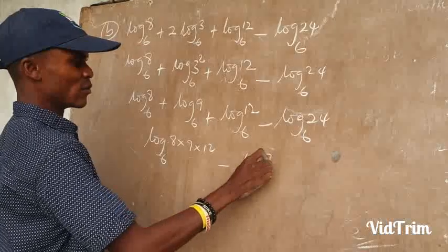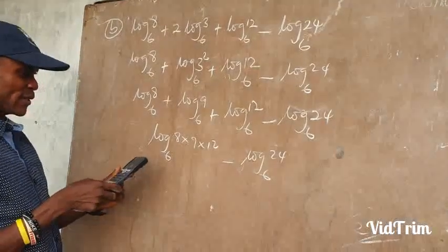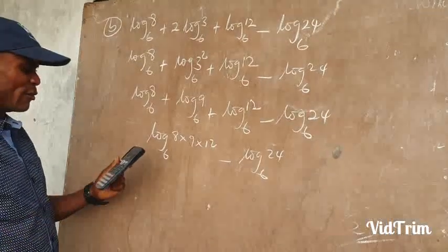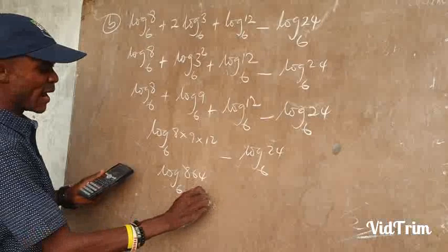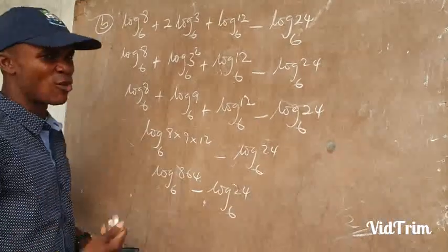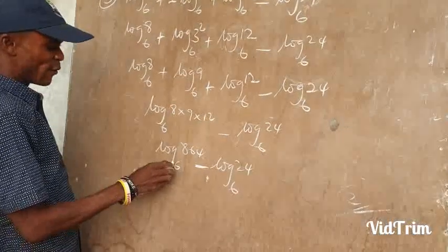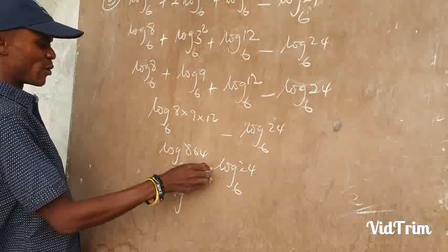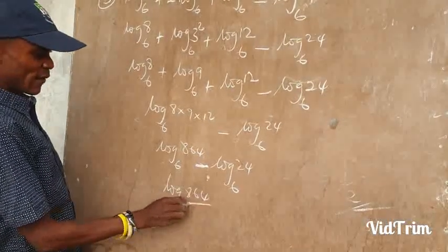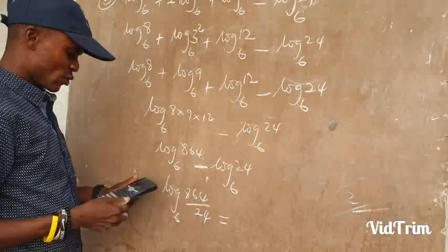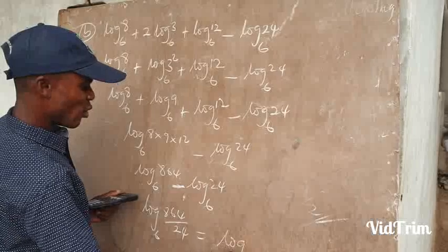Minus log of 24 base 6. Now we multiply 8 times 9 times 12, which gives us 864. We now have log of 864 base 6 minus log of 24 base 6. We apply the second rule: anytime you have division, you subtract the logs; so if you see subtraction, you divide the figures. 864 divided by 24 gives 36. That gives us log of 36 base 6.